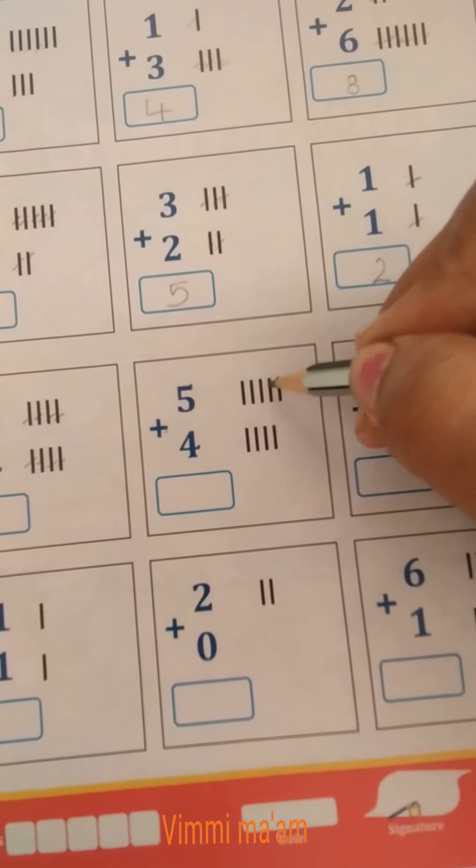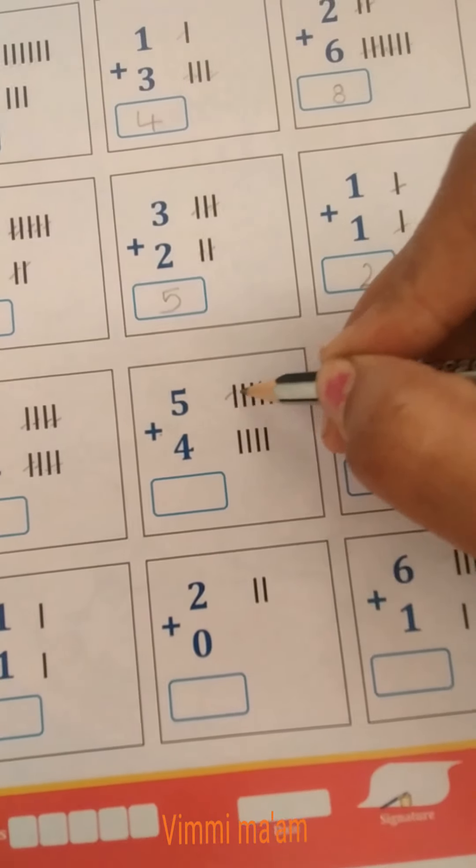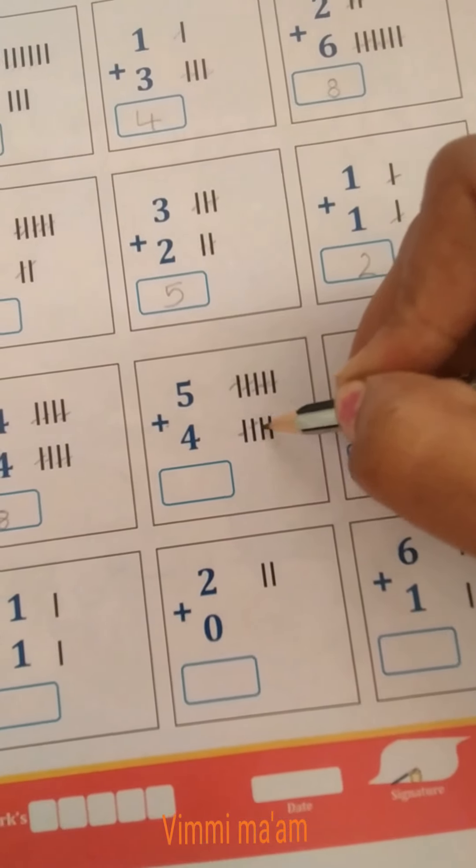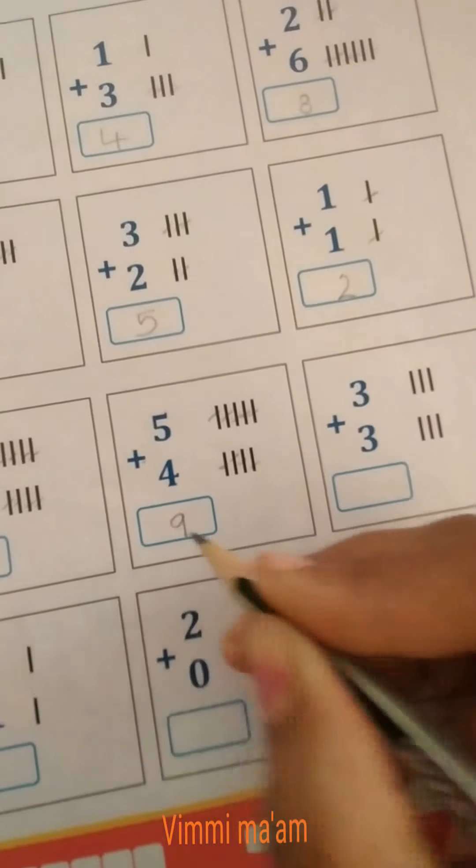5 plus 4. We count: 1, 2, 3, 4, 5, 6, 7, 8, 9. The answer is 9.